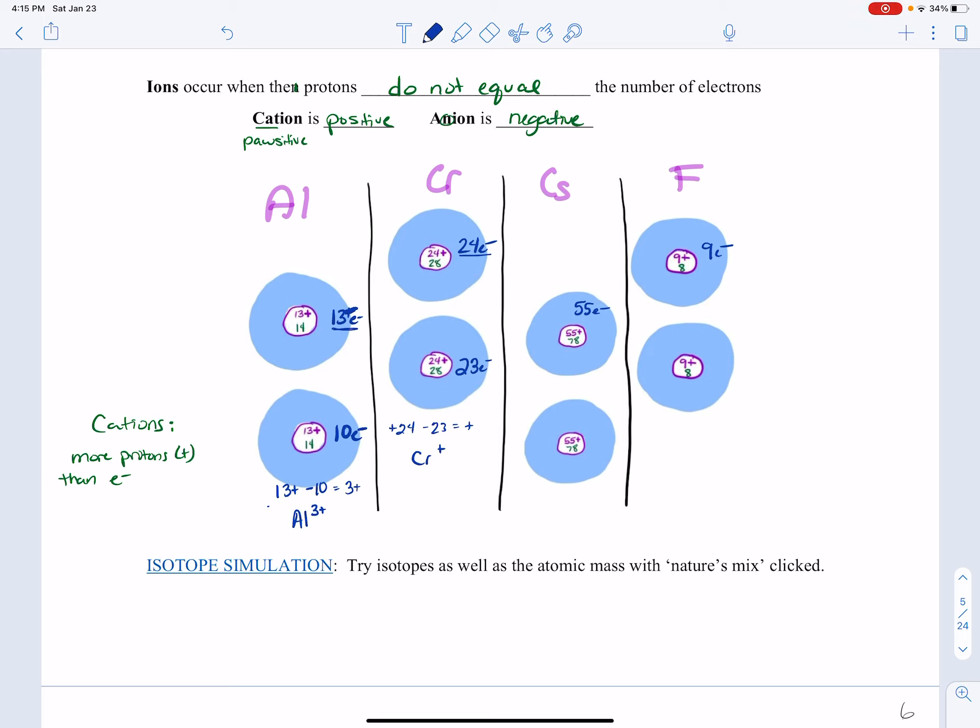Again, if we're going to make a positive, we're going to need less electrons. And so maybe like on this one, we could make it 53 electrons. So 55 minus 53 gives us two. So this is cesium two plus.